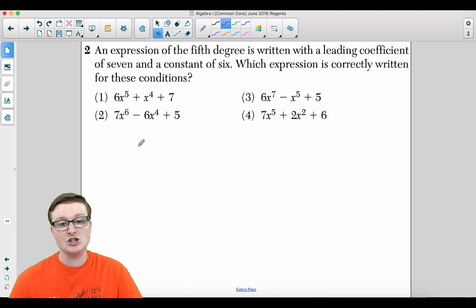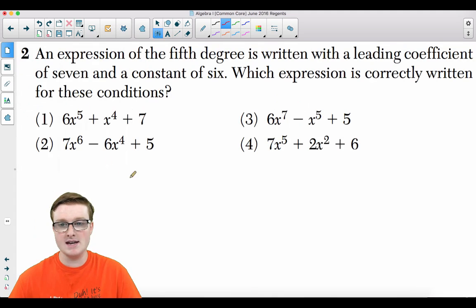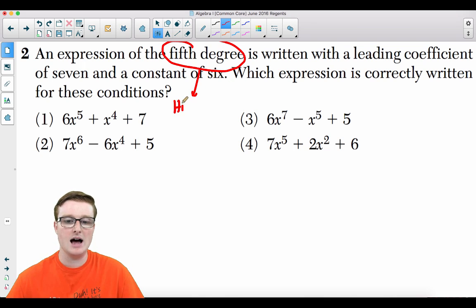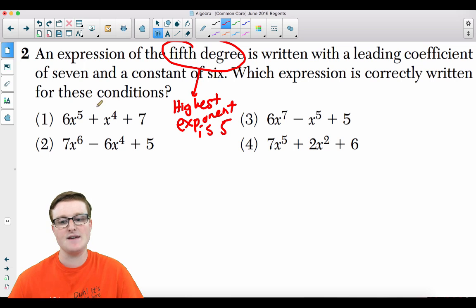Moving on to number two. An expression of the fifth degree is written with a leading coefficient of seven and a constant of six. Which expression is correctly written with these conditions? The fifth degree means that the highest exponent is five. If you look at all these answer choices, five is the highest exponent here. Six is the highest exponent, that can't be the answer. Seven is the highest exponent, that can't be the answer. Five is the highest exponent.